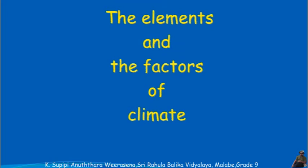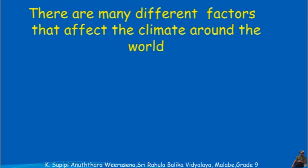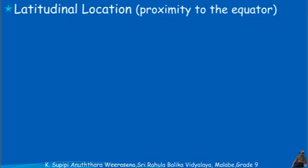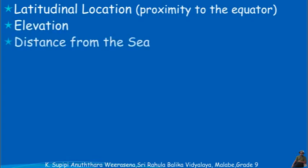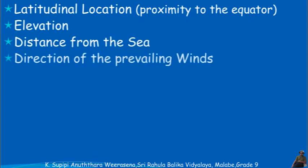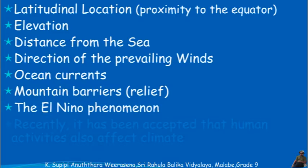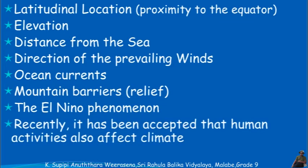There are many different factors that affect the climate around the world: latitudinal location, proximity to the equator, elevation, distance from the sea, direction of prevailing winds, ocean currents, mountain barriers, and the El Niño phenomenon. Recently, it has been accepted that human activities also affect climate.